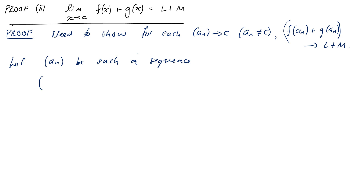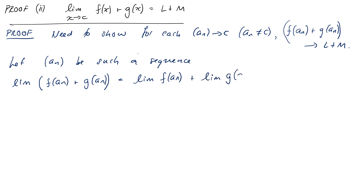We need to start with the sequence f(a_n) plus g(a_n) and find its limit. The limit of this sequence, by the algebraic limit theorem for sequences, is the limit of f(a_n) plus the limit of g(a_n) — by the algebraic limit theorem for sequences, which equals L plus M as required. So as soon as we made this a statement about sequences, we could just use the corresponding algebraic limit theorem for sequences to split our sum into the two limits individually, giving us L plus M.